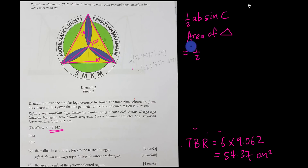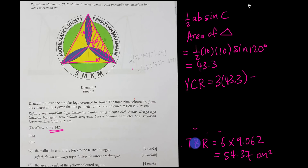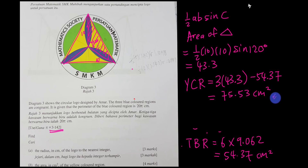Area of one triangle = ½ × 10 × 10 × sin(120°). Make sure your calculator is back in degree mode — you should get 43.3. The yellow color region = 3 × 43.3 − 54.37 (total blue region). Using your calculator, the final answer is 75.53 cm².